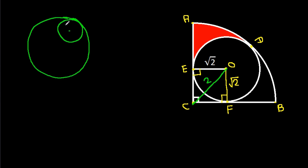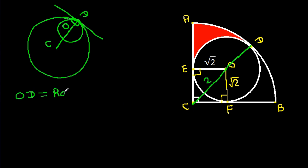Suppose the centers of the circles are O and C. If we join OC, then it will pass through the common point of contact — suppose D — and that will be perpendicular to the tangent at point D. So if we extend CO, it will pass through point D, and OD will be the radius of the circle, which is square root of 2.